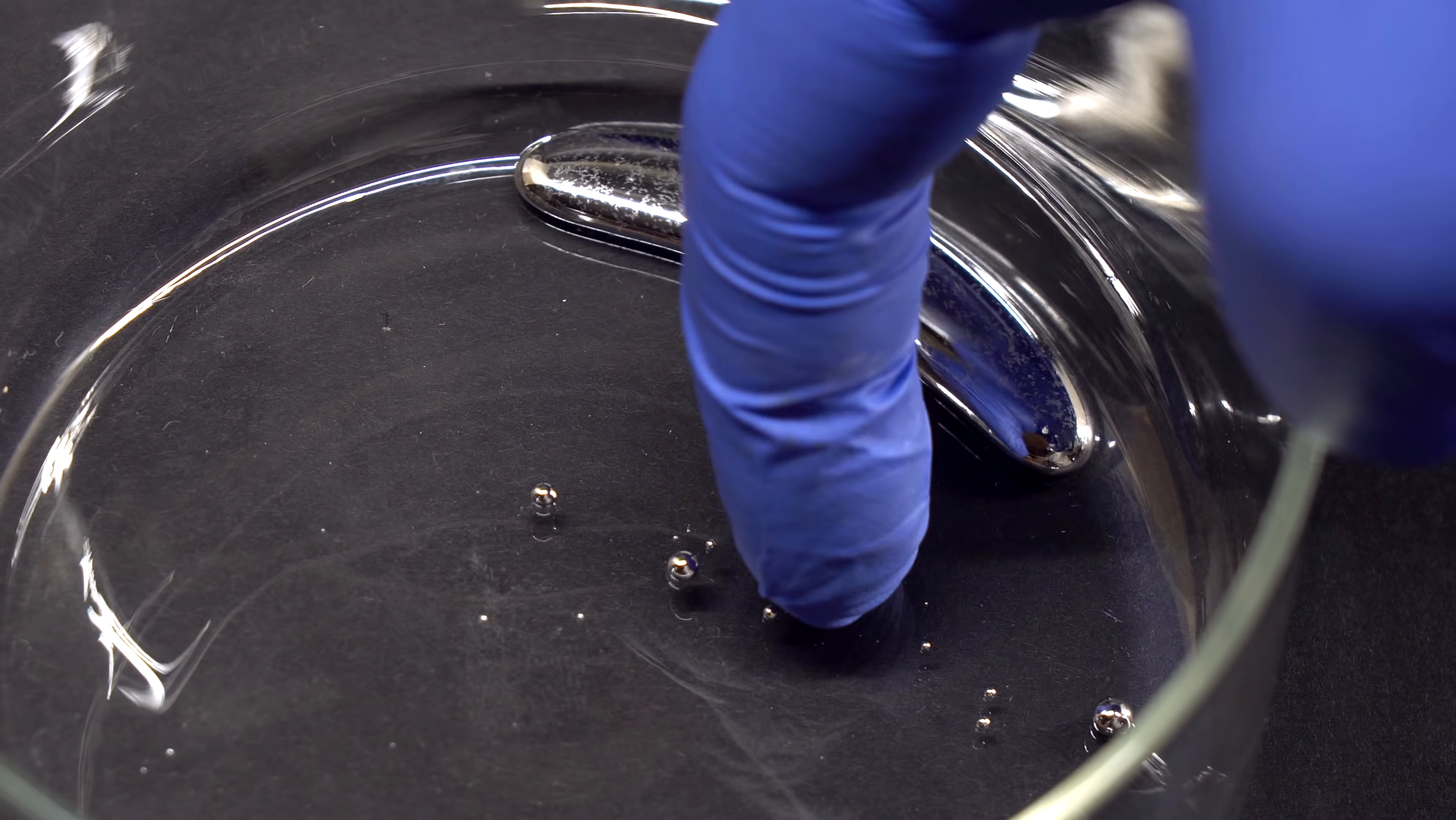Besides, mercury also has an incredibly high coefficient of surface tension, which is why drops of this metal always take a round shape. This is exactly what makes this metal so treacherous.